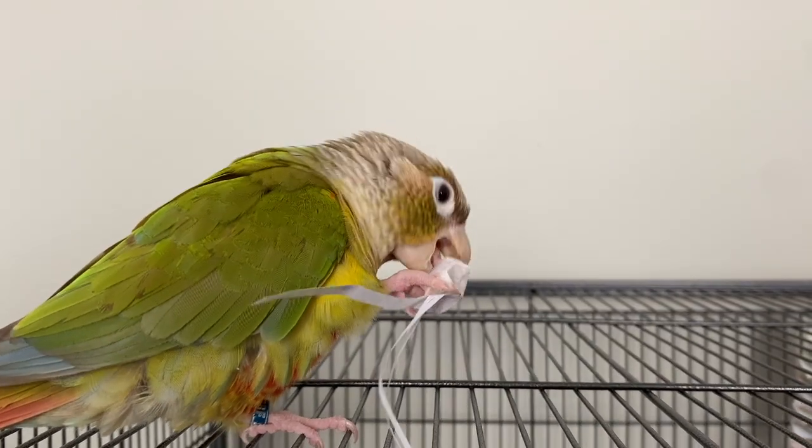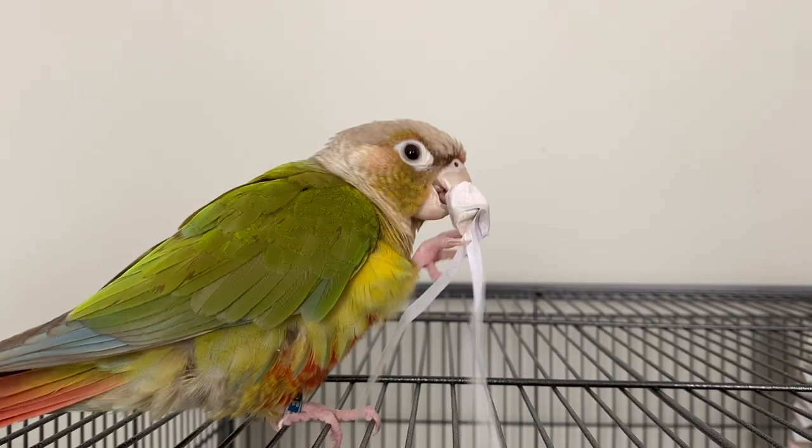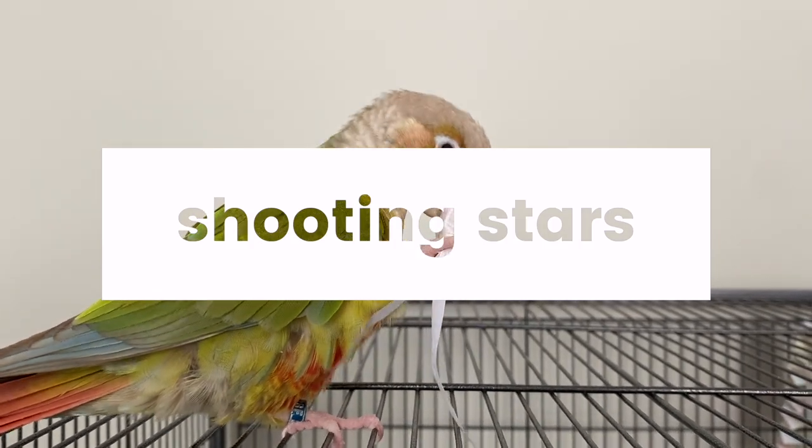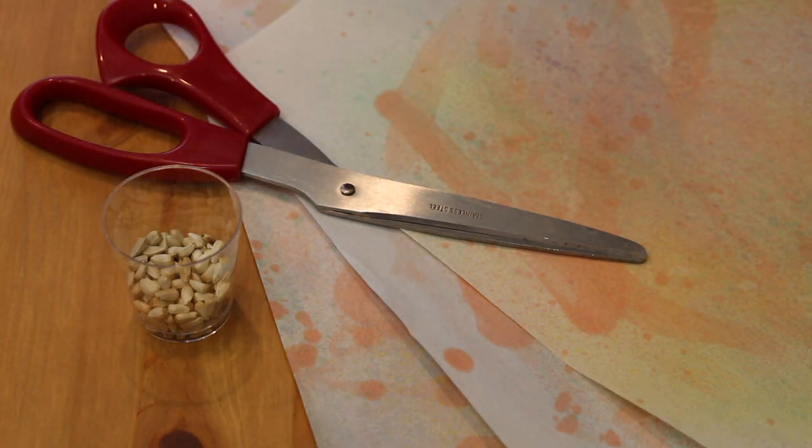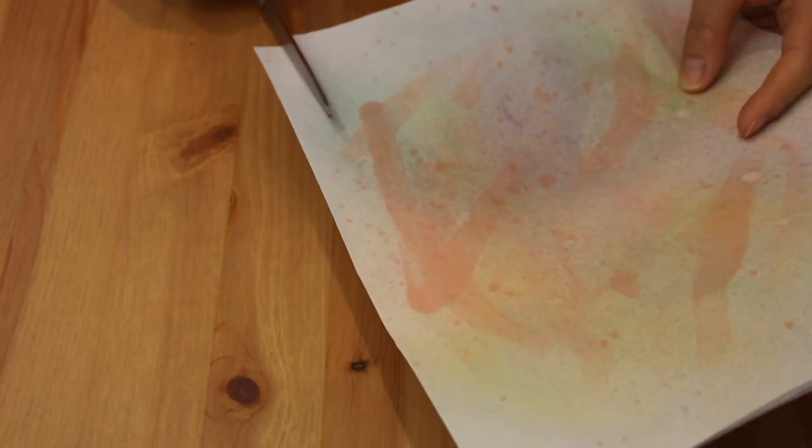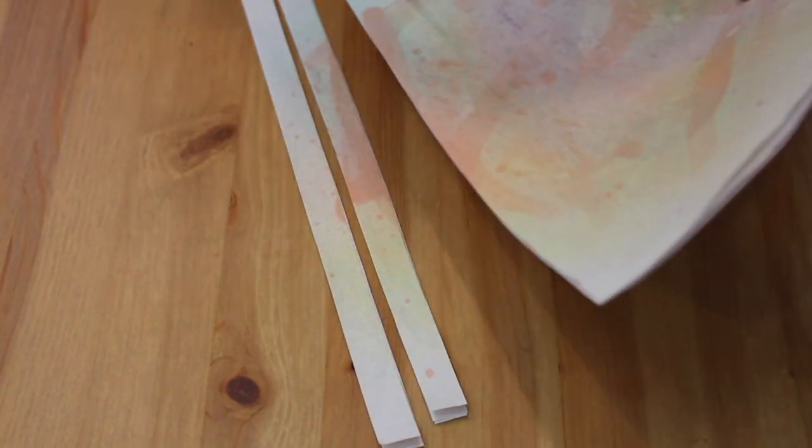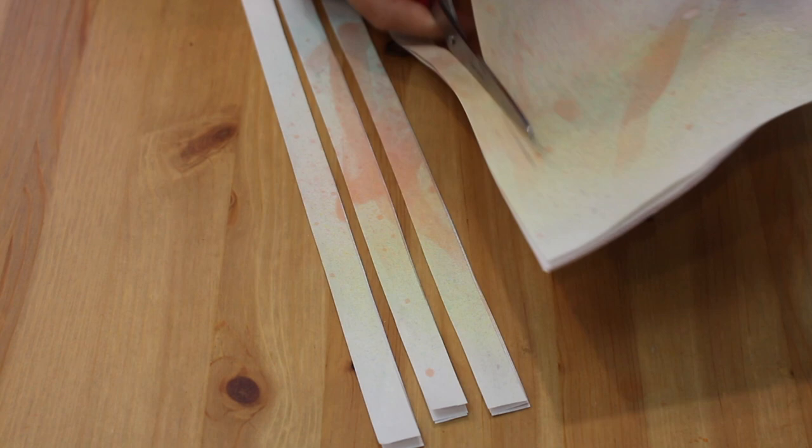So this next bird toy kind of reminds me of my childhood because I used to make a bunch of these and stick them in a jar. This is what I call shooting stars. You're going to need the colorful paper that you made, some scissors, and small treats, which is totally optional. So what you'll do is take your paper and cut it lengthwise into about half inch strips. You want to cut a good amount because we're also going to be using this for the next two toys.